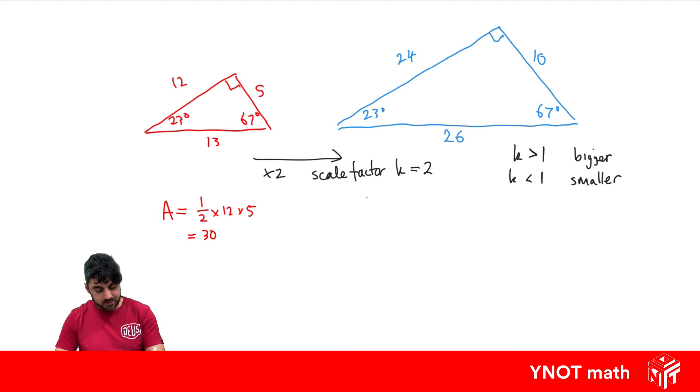And that's going to give us 30 units squared. Let's have a look at our other triangle. So we've got a half times 24 times 10, and this time it's going to give us 120.